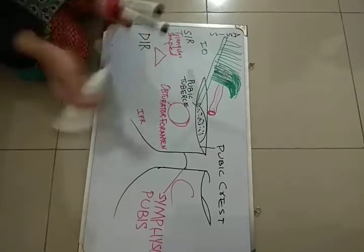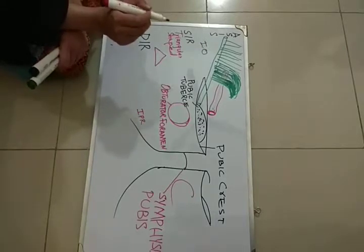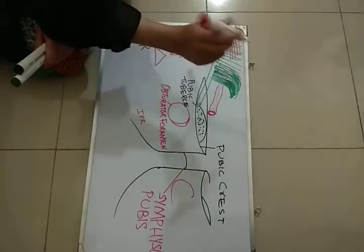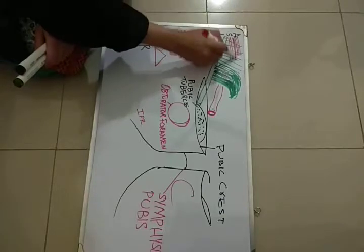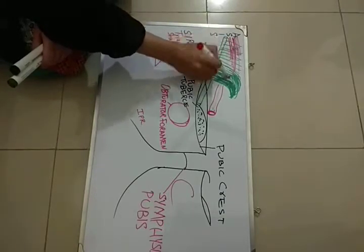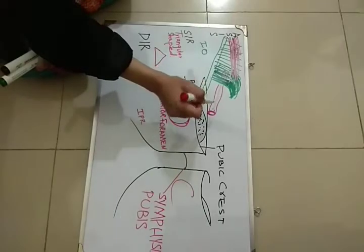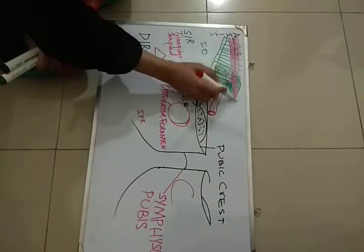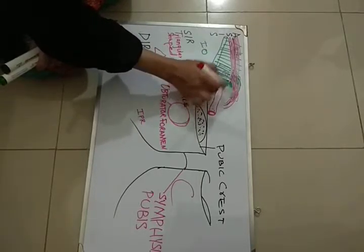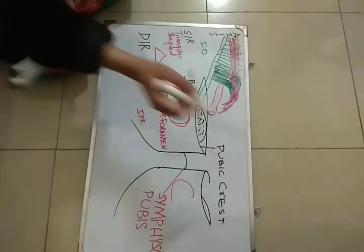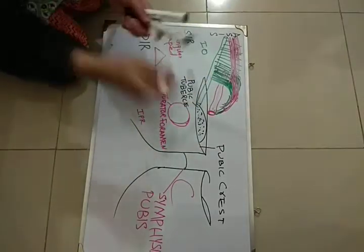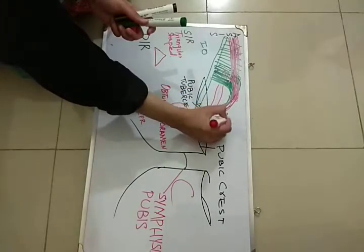The transversus abdominis muscle, as the name indicates, is transversely arranged. When the transversus abdominis muscle reaches well above the inguinal canal, its fibers begin to turn so that it can merge with the internal oblique and form the roof of the inguinal canal. These two fibers — the internal oblique and the transversus abdominis — reunite and form the conjoint tendon.